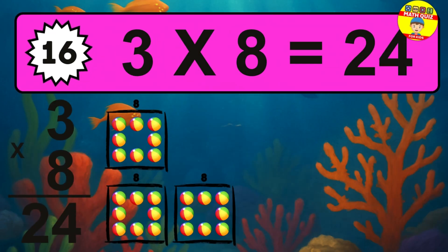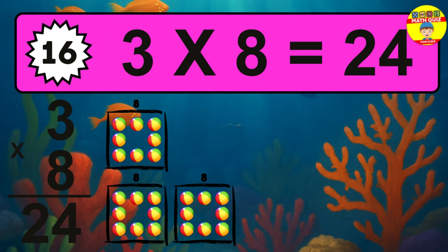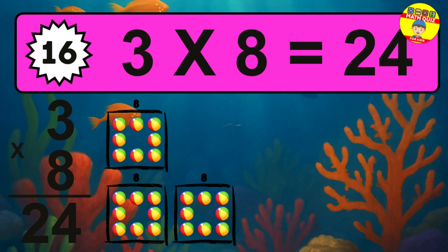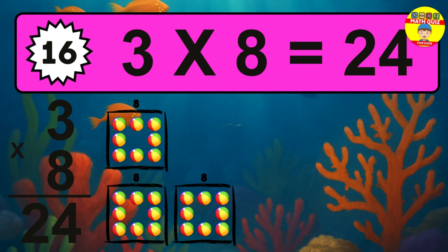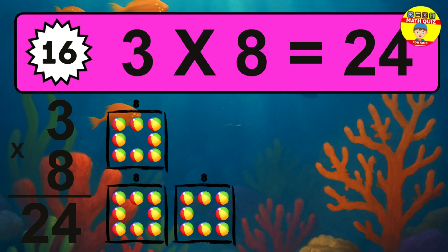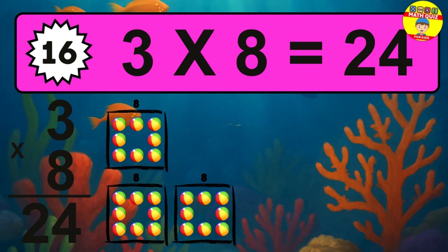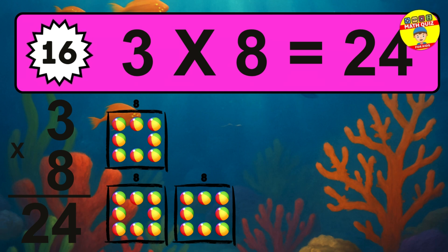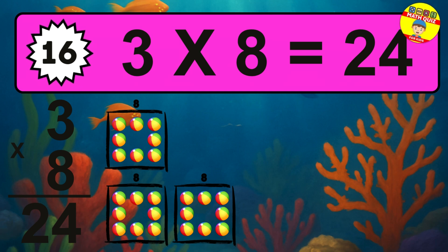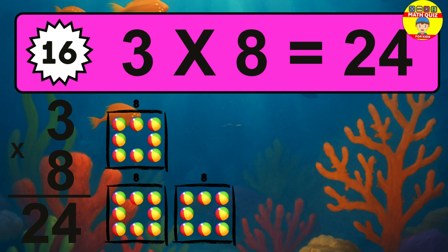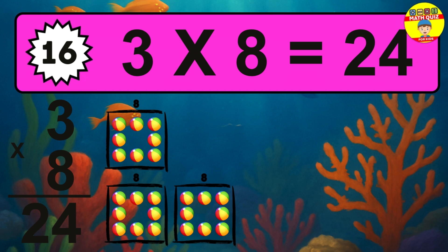Question 16. 3 times 8 equals what? The answer is 3 times 8 is 24. To calculate, we have 3 groups with 8 balls each one. So, how many balls do we have? 24 balls.